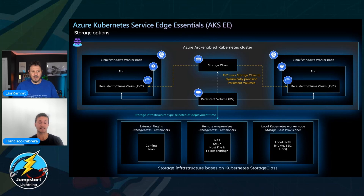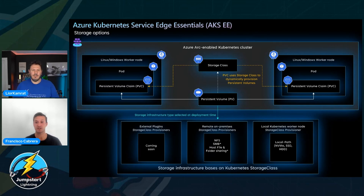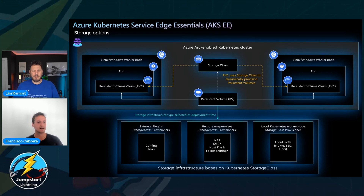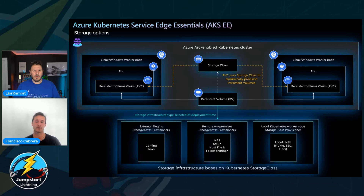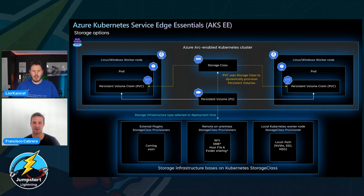Correct. We're seeing a lot of use cases where they have deployments that they want to make Kubernetes-based — they already have the hardware there and they want to go ahead and modernize those solutions with AKS Edge Essentials. And then finally, we have external plugins we're working to bring — we're talking about Longhorn, OpenEBS, and Rook-Ceph. We will bring support for those in the future. So let's go ahead and see how this works — if you're okay with that.